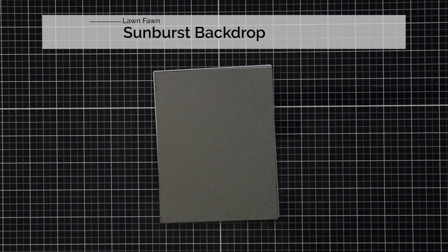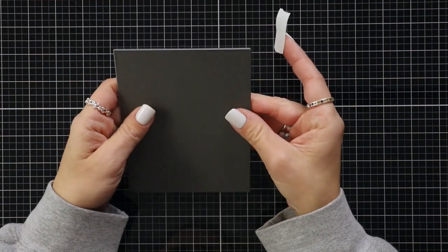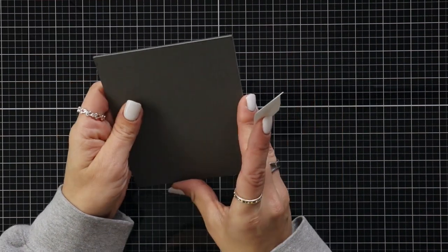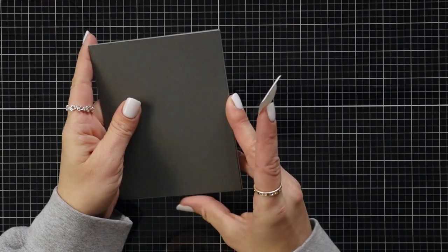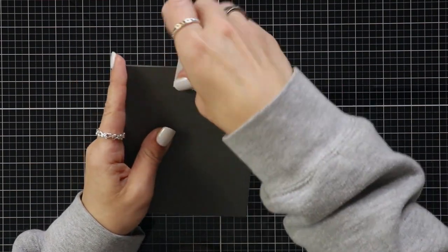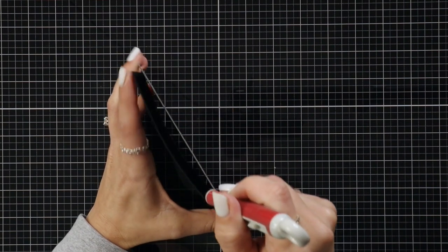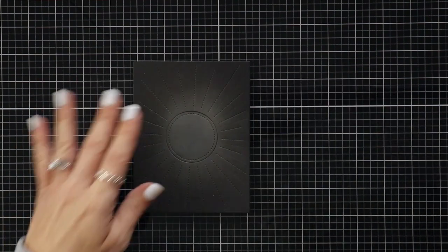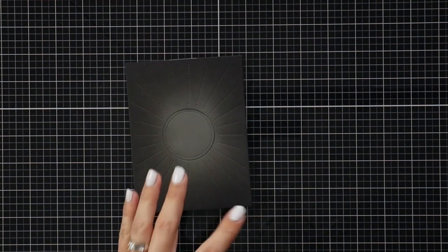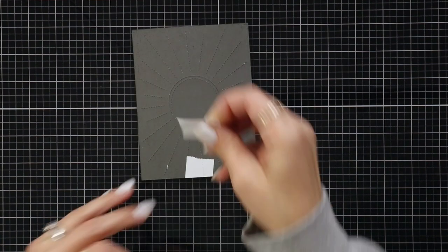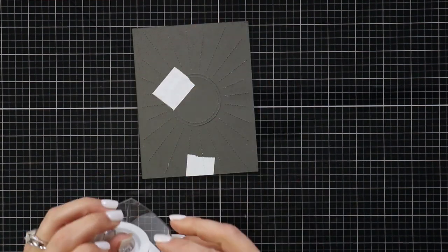Then I'm going to bring in the sunburst backdrop die. I'm going to line that up with my ink blended panel and hold that in place with post-it tape so it doesn't shift around and run that through my die cut machine. Now when I pop this out the center does stay in place and I want to make sure it stays there so I am going to flip this over and secure that centerpiece in the back with some post-it tape.